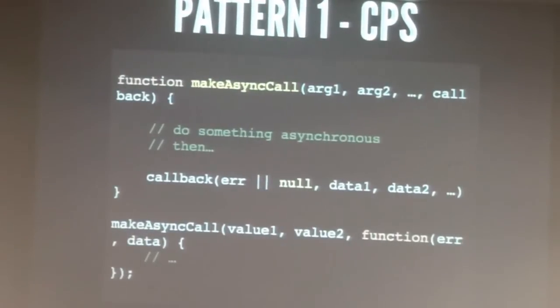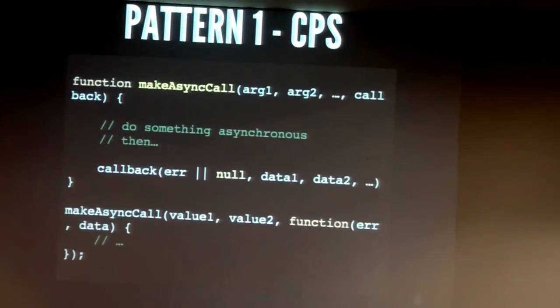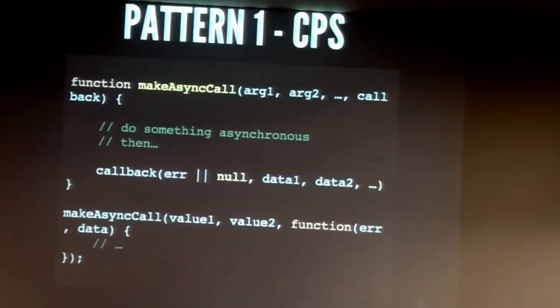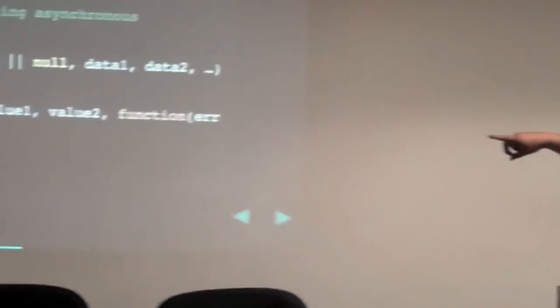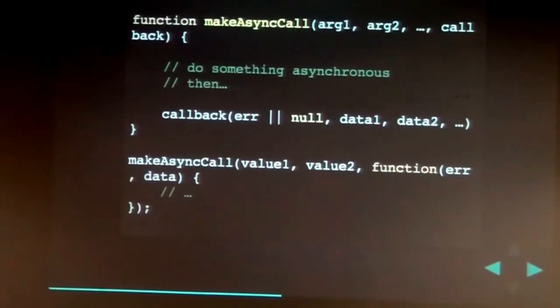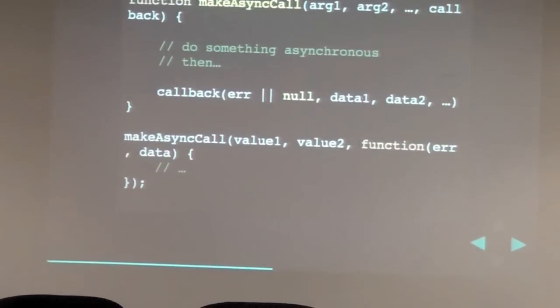The Node guys decided if we have a standard way to do this, there's a lot of interesting stuff we can do. They came up with CPS — Continuation Passing Style. I think it's because your code sort of continues where it had left off the last time. At the bottom there's a function called makeAsyncCall, where I'm passing value1 and value2. The important thing is that regular arguments go first, then the callback is the last argument to the function.